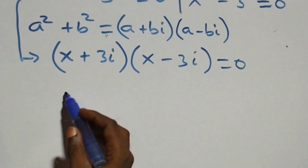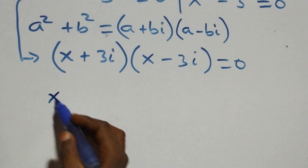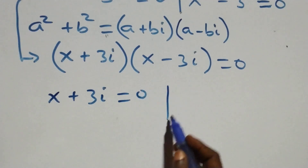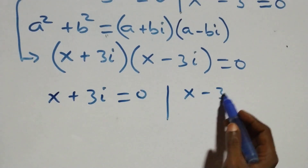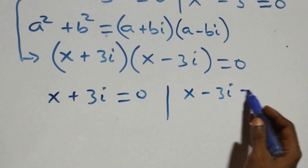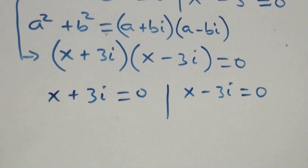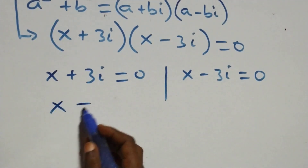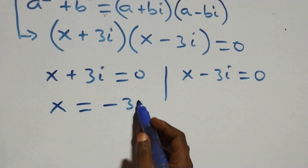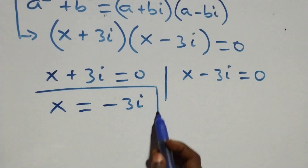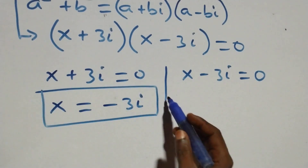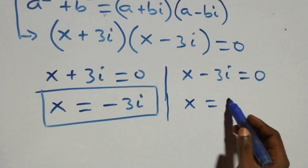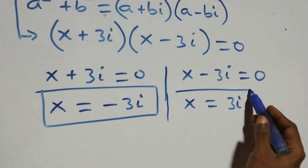From here we have two cases: x plus 3i equals zero or x minus 3i equals zero. This gives x equals minus 3i, which is a complex solution, and x equals 3i, which is also a complex solution.